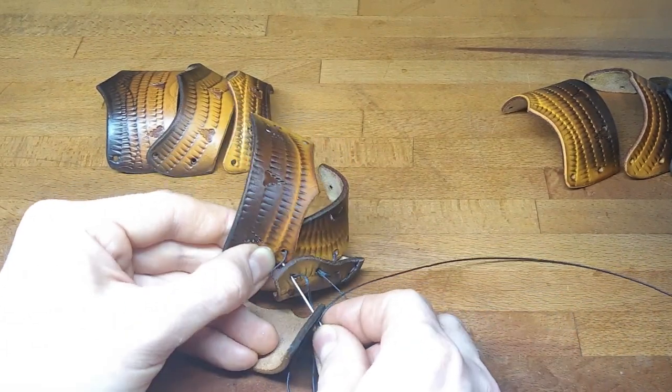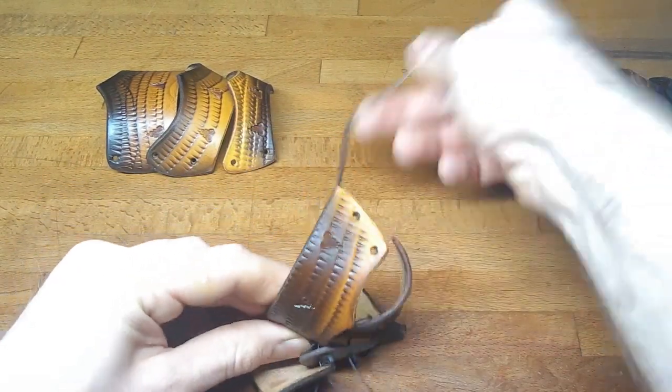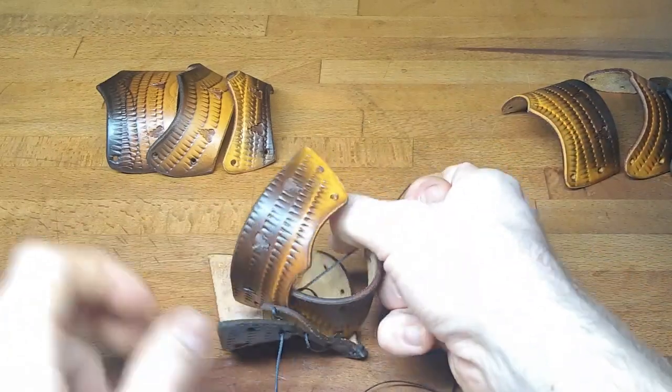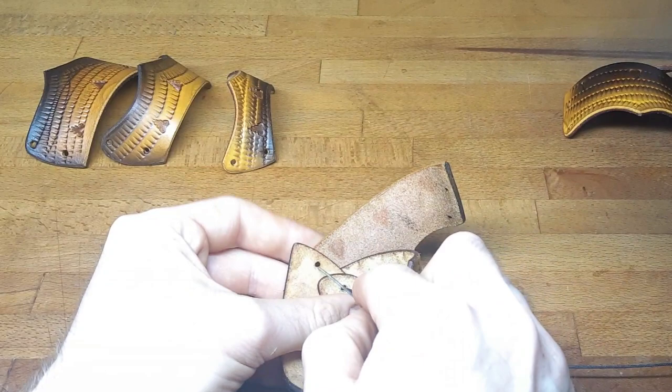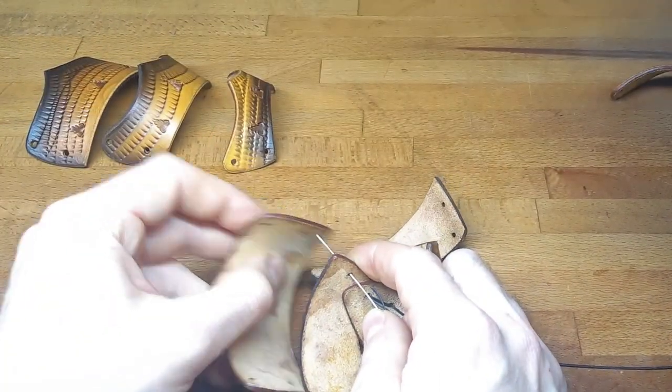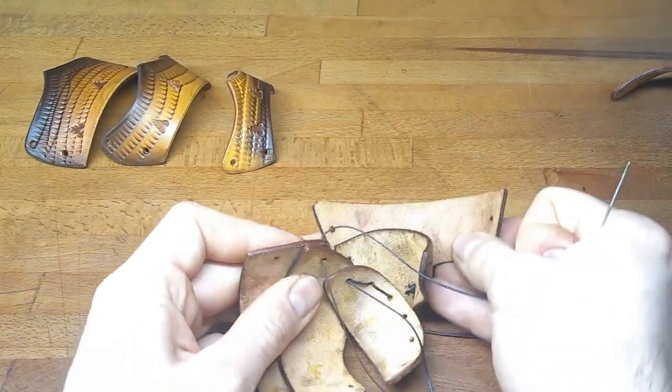And from the outside we go all the way back to the inside and then tighten it. So again, we start going through the already existing bottom piece.